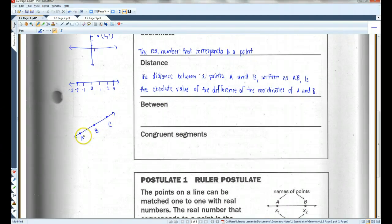So here, because A, B, and C are collinear, that means they make a straight line. B is between A and C. If B was over here somewhere, I could not say that B is between A and C.